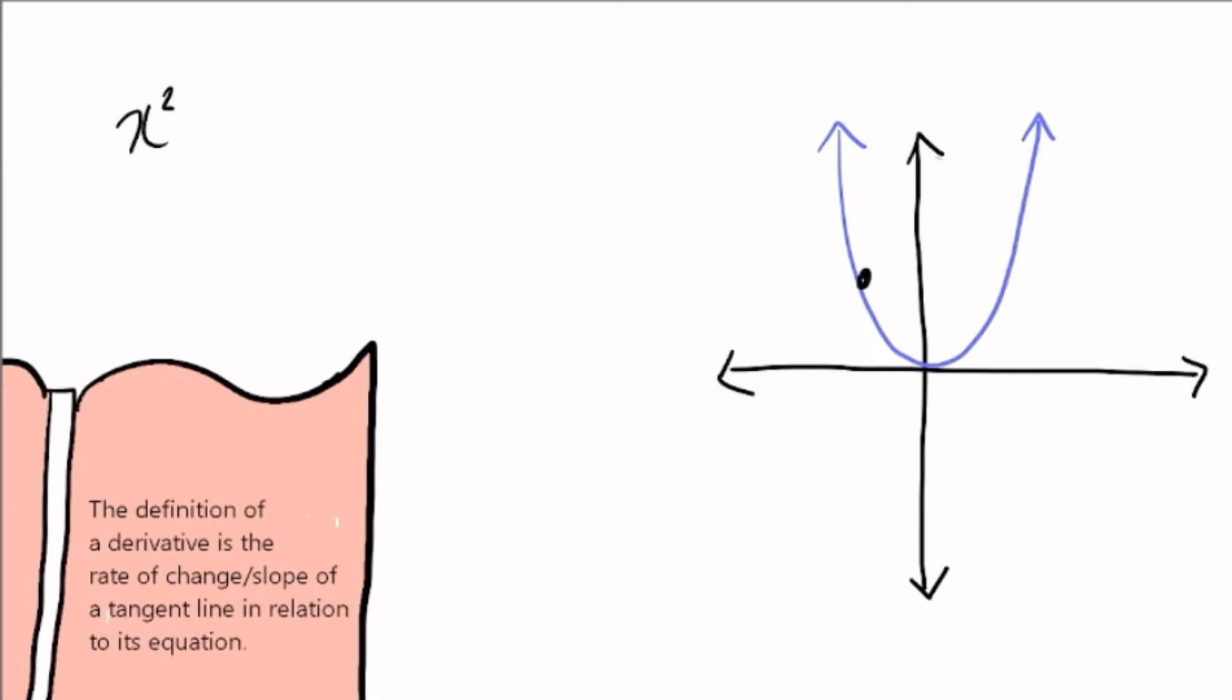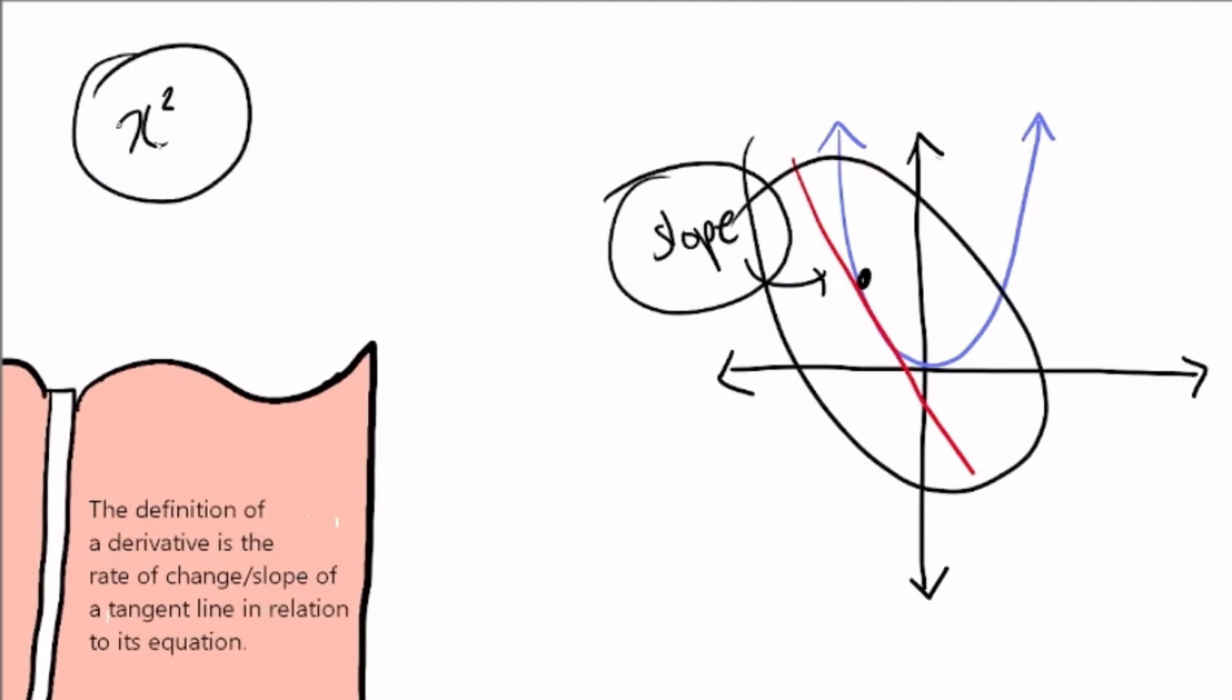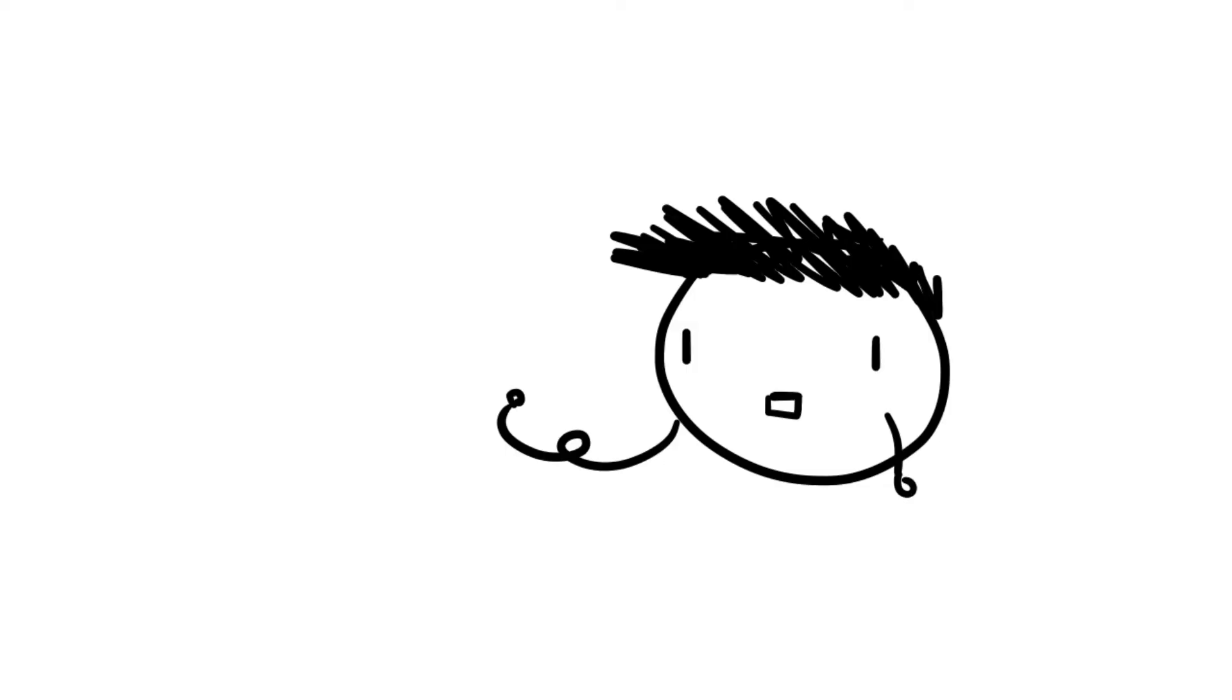And we can practically do this for any tangent line in respect to x squared. So the slope of this tangent line would be what the derivative gives us. So essentially, the definition of a derivative is a rate of change slash slope of a tangent line in relation to its equation. So now that we understand the concept of derivatives, how do we find derivatives?